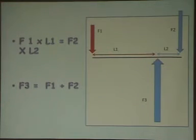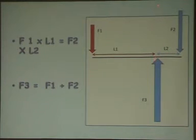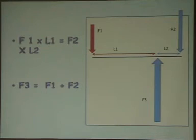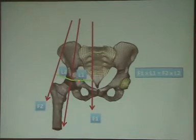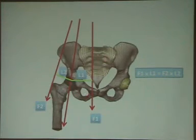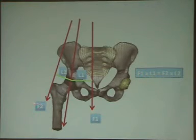This diagram is very important: force one and force two with different lever arms will create a summation force that can be opposed by another force in the opposite direction. Looking again at the hip, we have the body weight and the abductor force, each with their respective lever arms. If body weight increases, the abductor force must also increase to balance the body, which in turn increases the summation force on the hip.